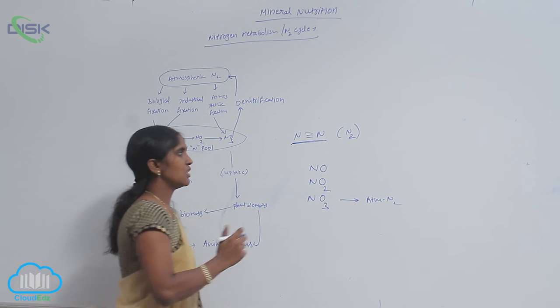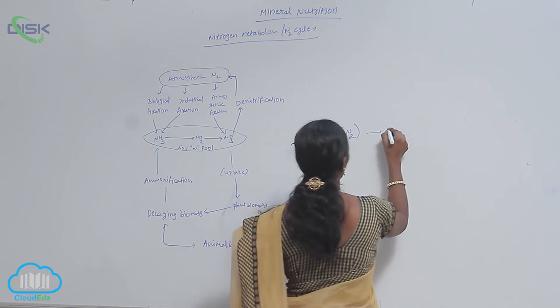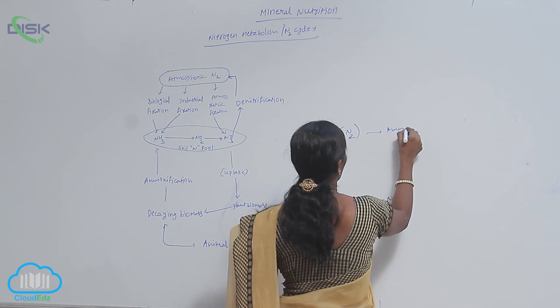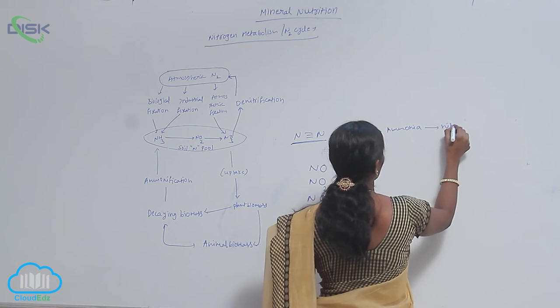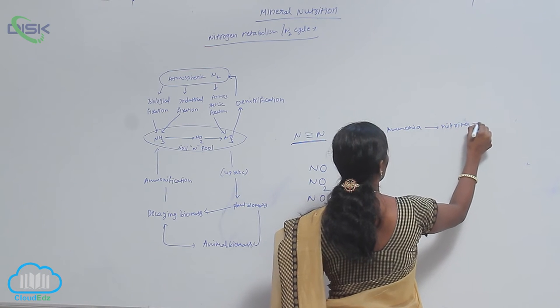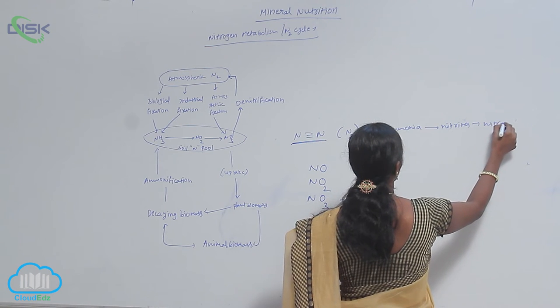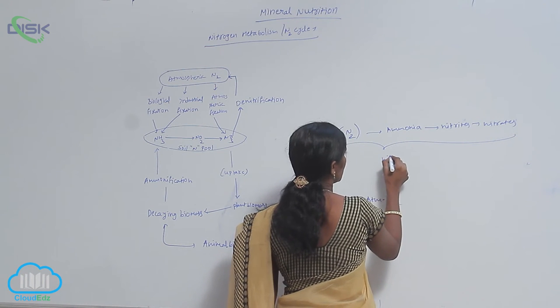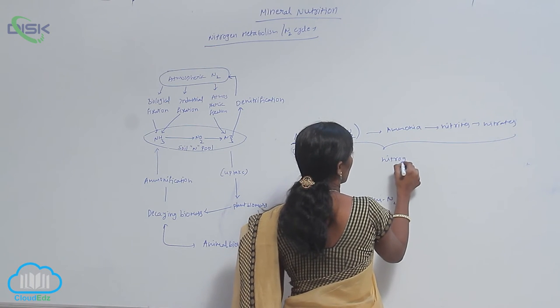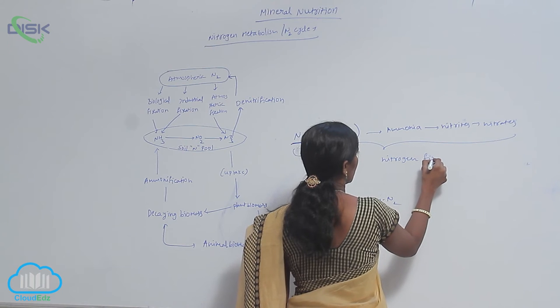Here the atmospheric nitrogen is converted into ammonia, and ammonia to nitrites formation, nitrites to nitrates formation. This complete procedure is called nitrogen fixation.